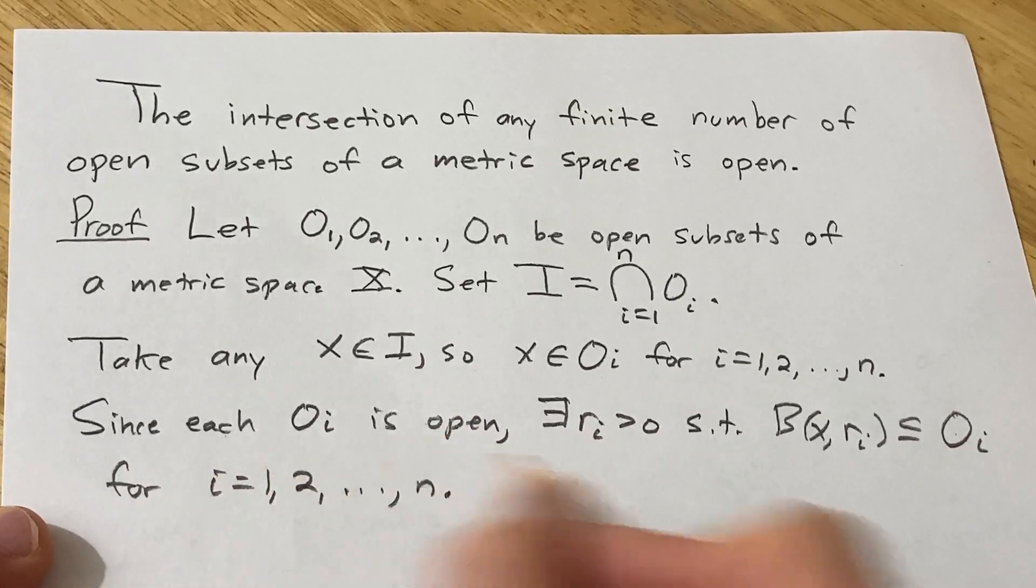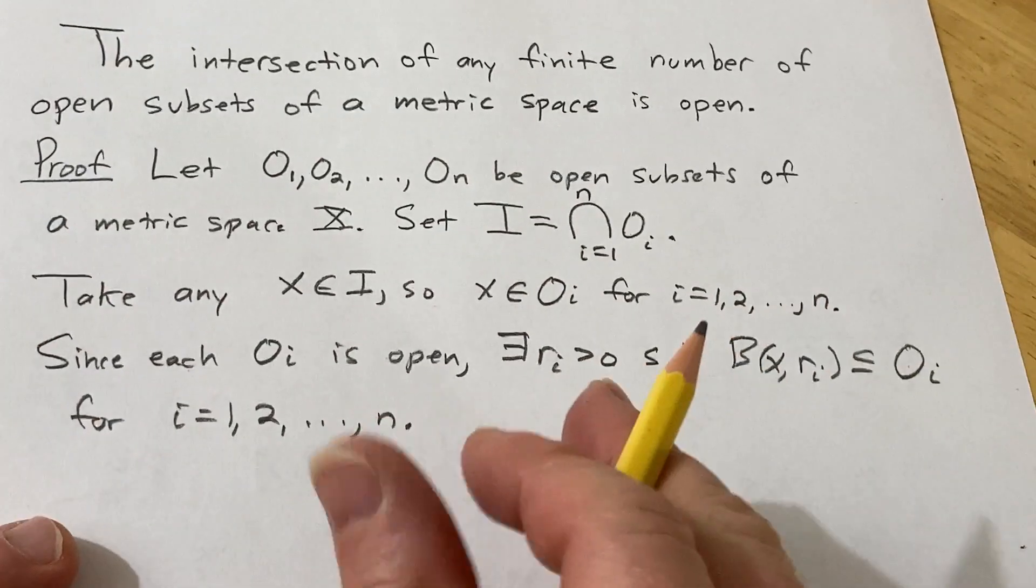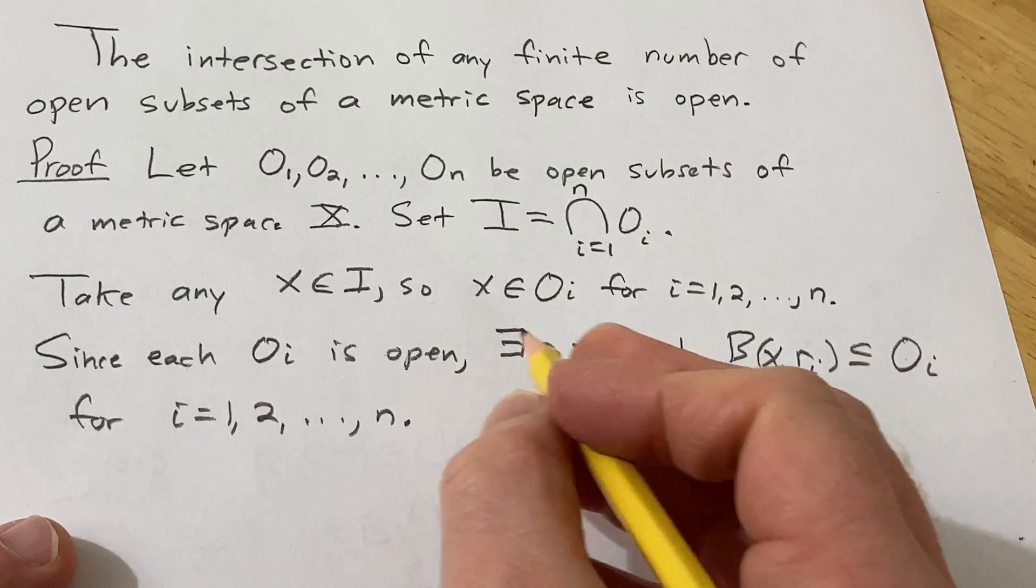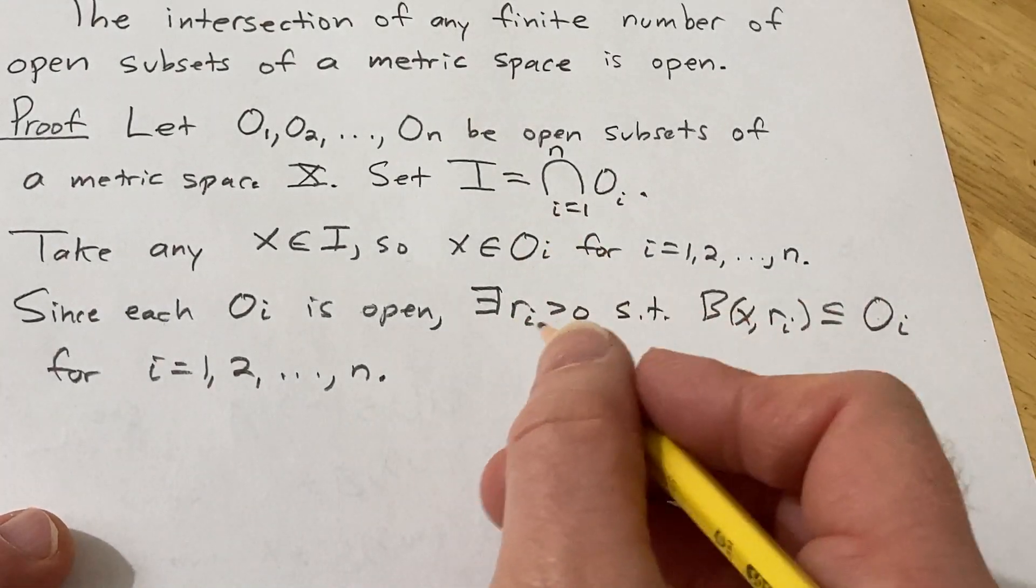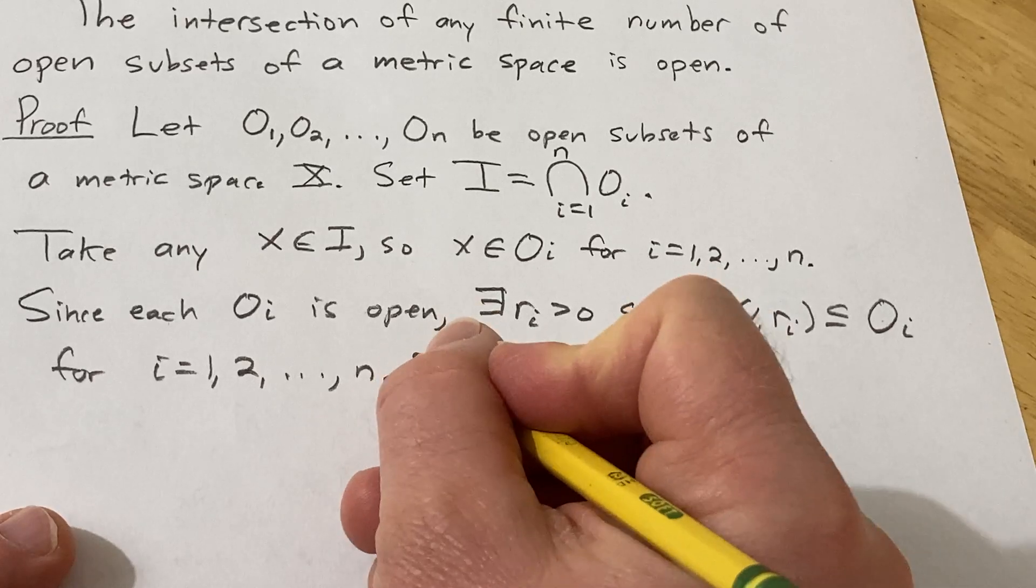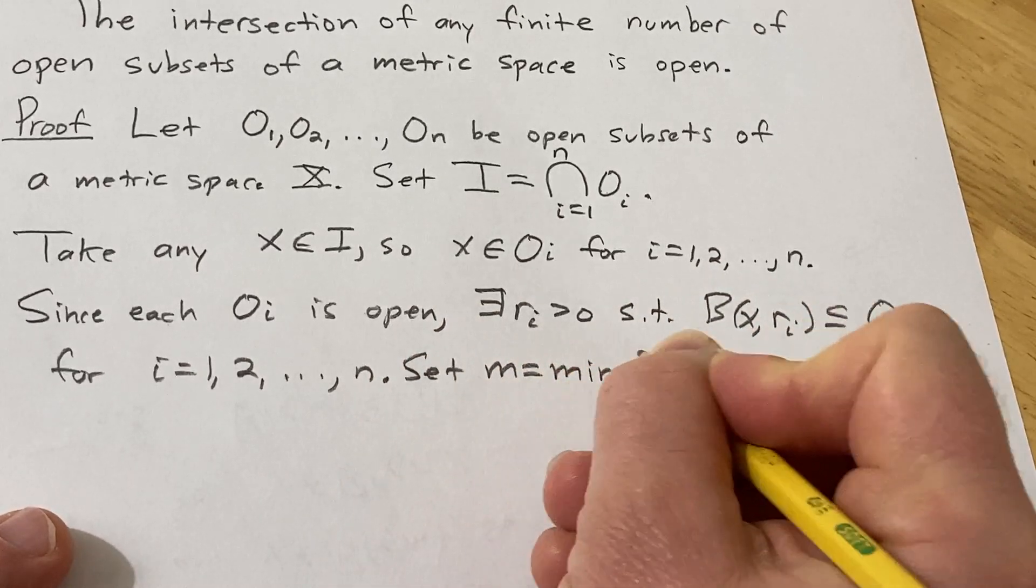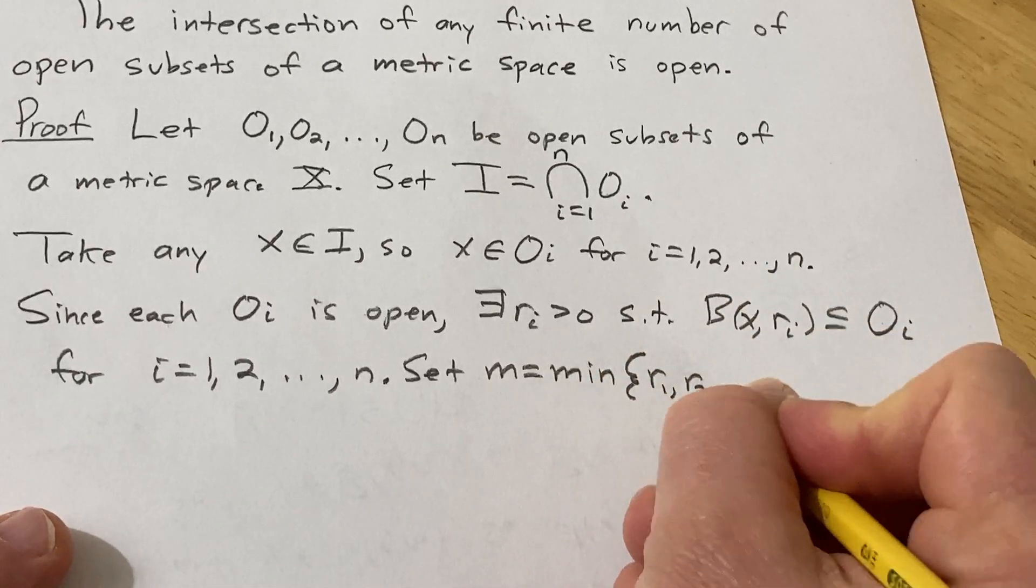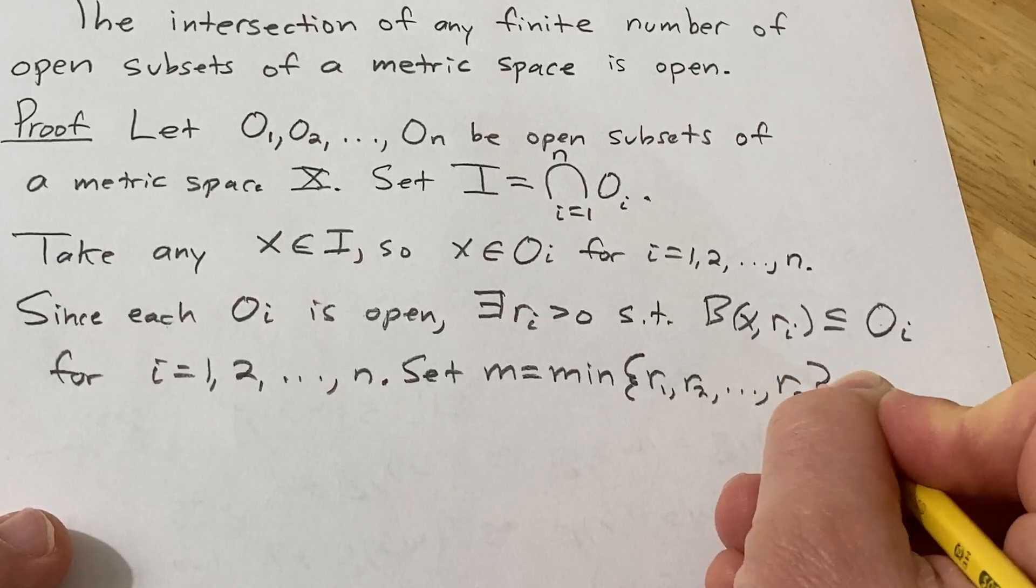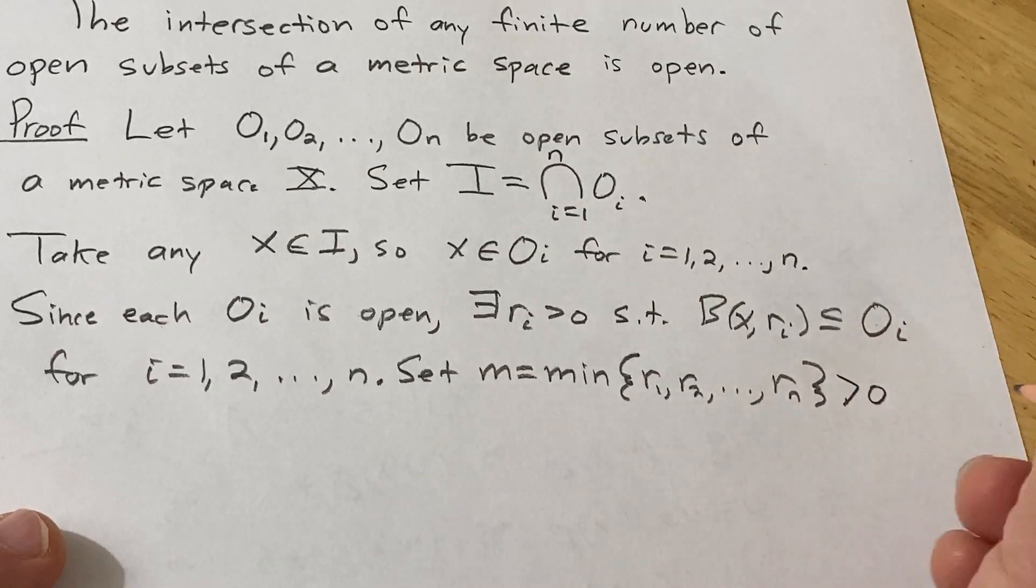Just to really emphasize that it's for all of them. So we have n open balls and so we have n positive numbers. And so when you have n positive numbers you can find the minimum and that will also be a positive number. So set m equal to the minimum of these numbers here. And note this is positive because the minimum of a finite set of positive numbers is positive.